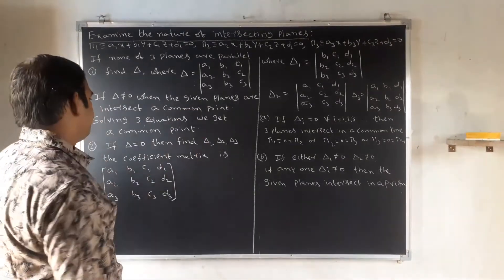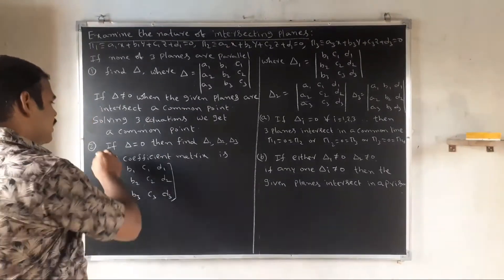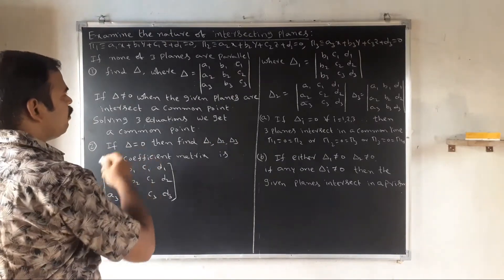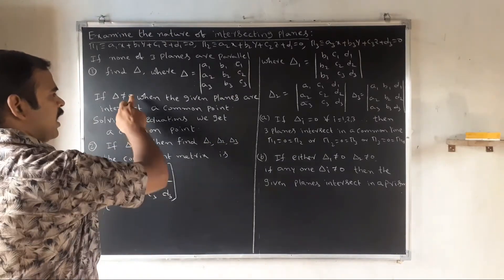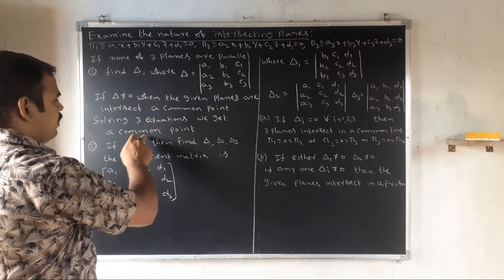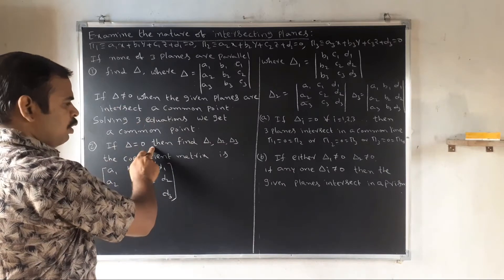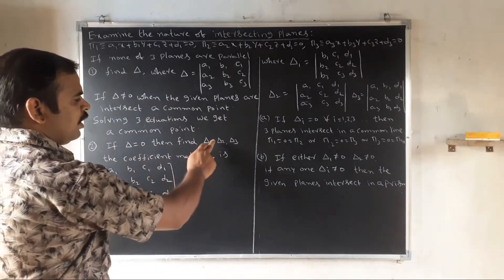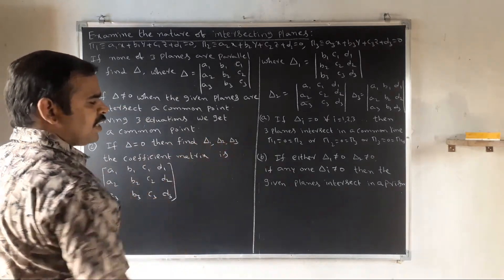That is the first method. Second: if delta equals zero, then find delta1, delta2, and delta3 from the augmented coefficient matrix with columns including d1, d2, d3.